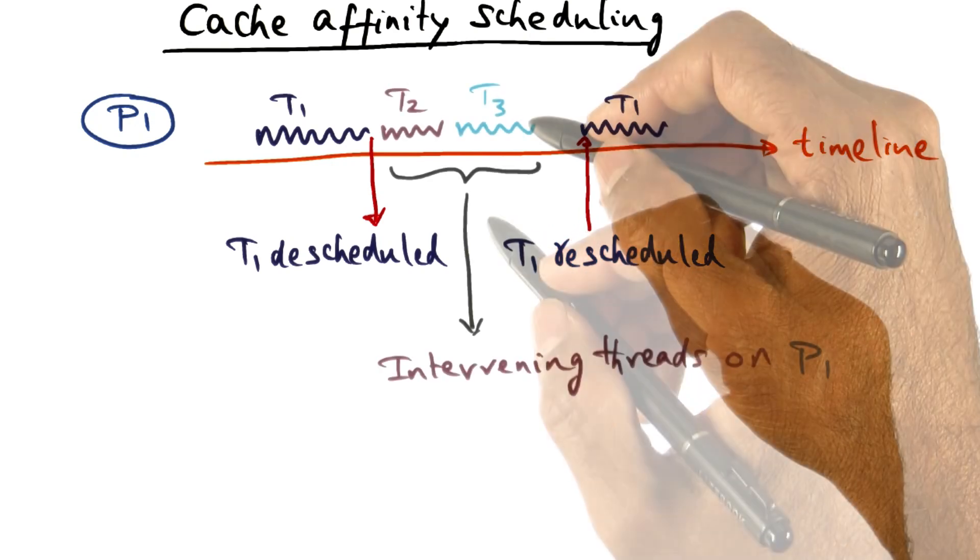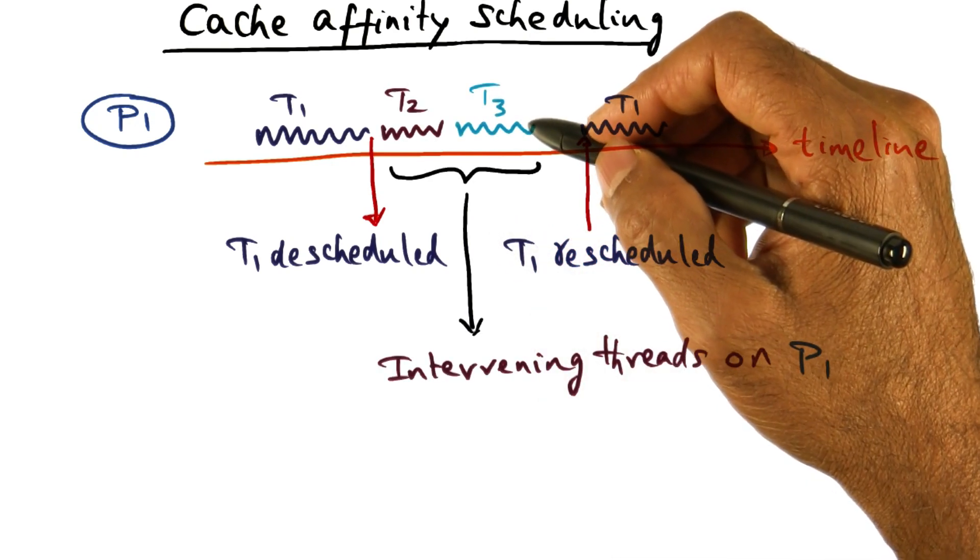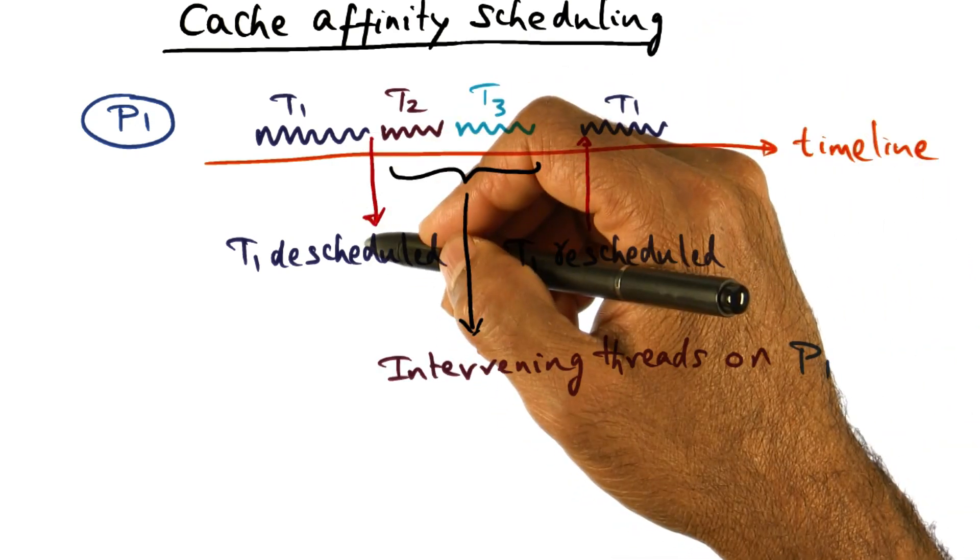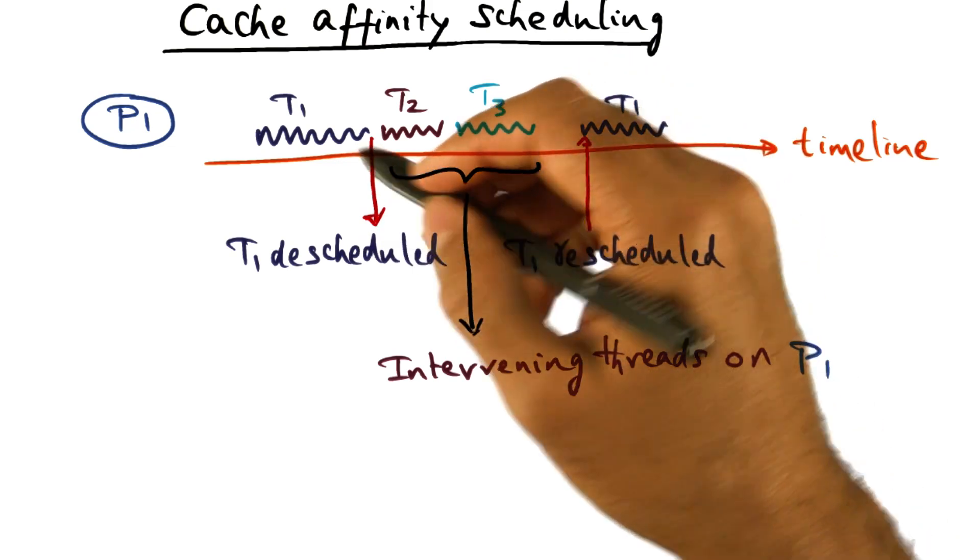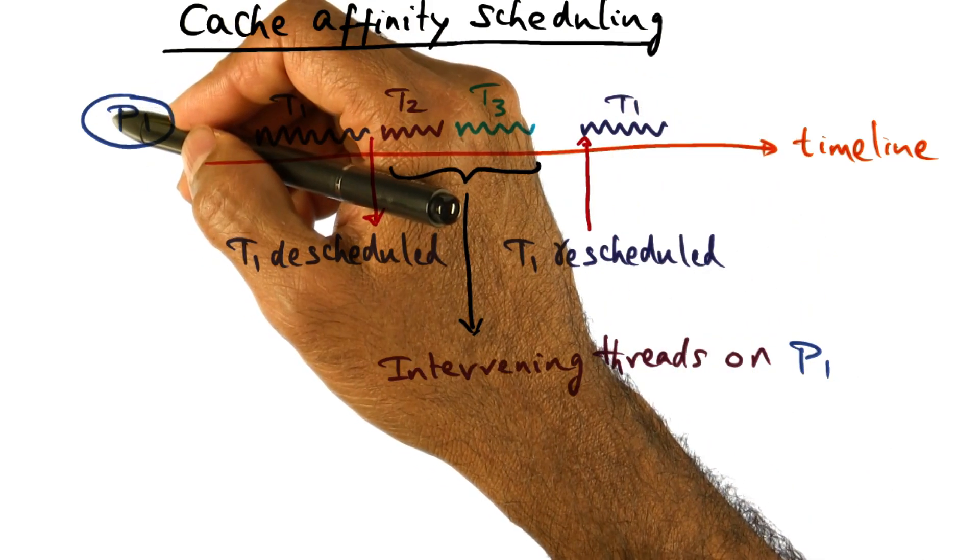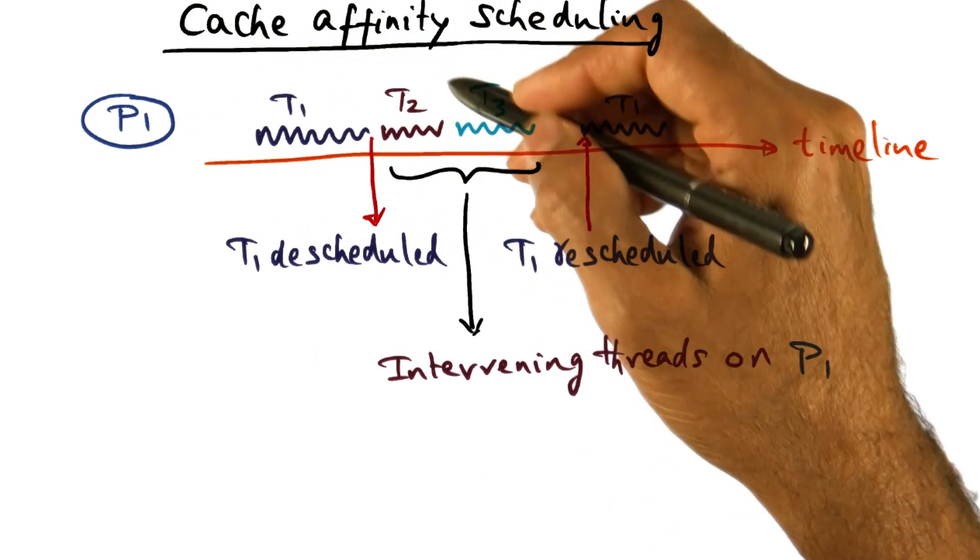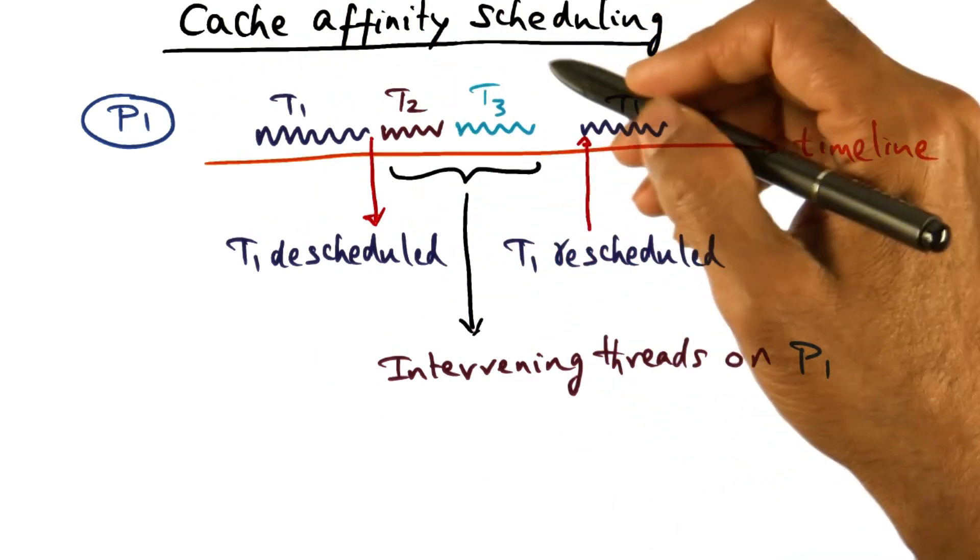But can something go wrong? Well, what can go wrong is the following. When T1 was descheduled, the scheduler may have decided that P1 is now available for doing business for some other thread. So it scheduled T2, and it scheduled T3.